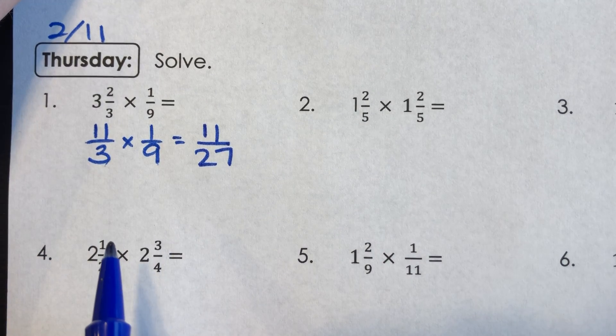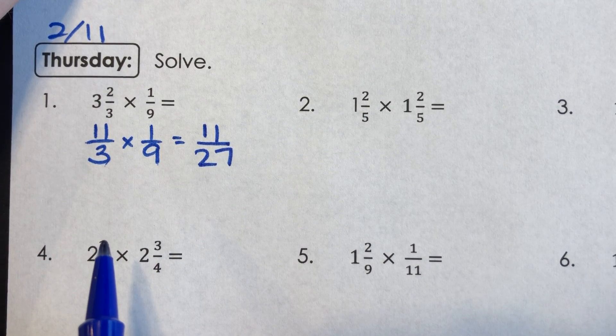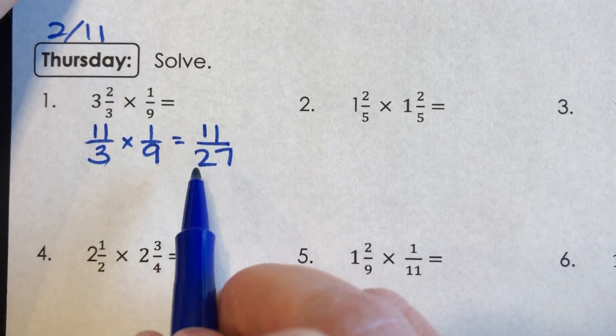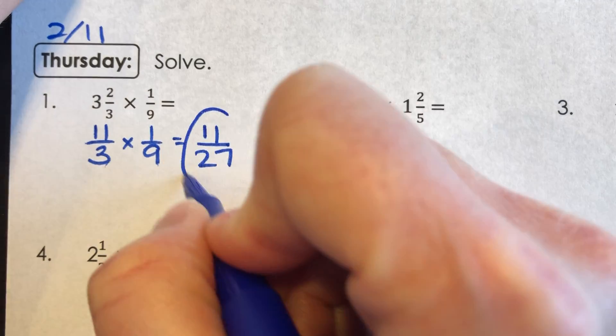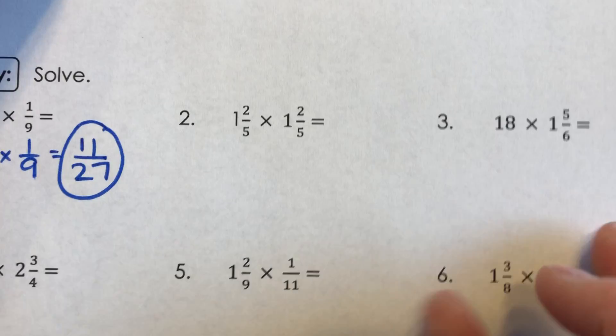Now when I look at this, I notice it's not improper at all. I can leave it just like this. There's not a number that divides into 11 and 27 other than one. So you're done with that.